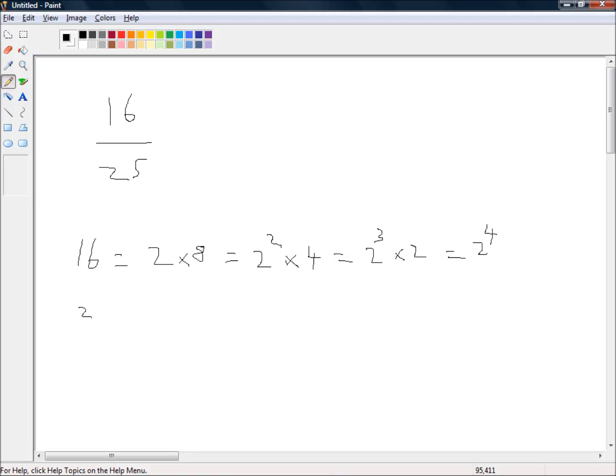And 25 is equal to, well, that's just 5 times 5, which is equal to 5 squared. There are no 5s in 16, and there are no 2s in 25. So they've got no common factors. So this fraction is said to be irreducible. In other words, it's already in its simplest form, so there's nothing we need to do with it.